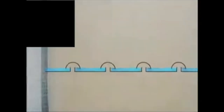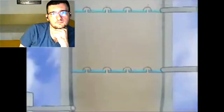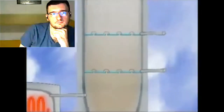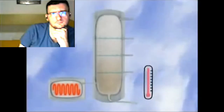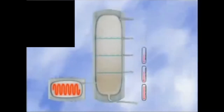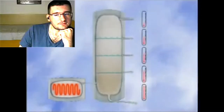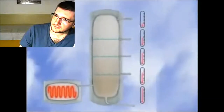Different hydrocarbons condense out of the gas cloud when the temperature drops below their specific boiling point. The higher the gas rises in the tower, the lower the temperature becomes.